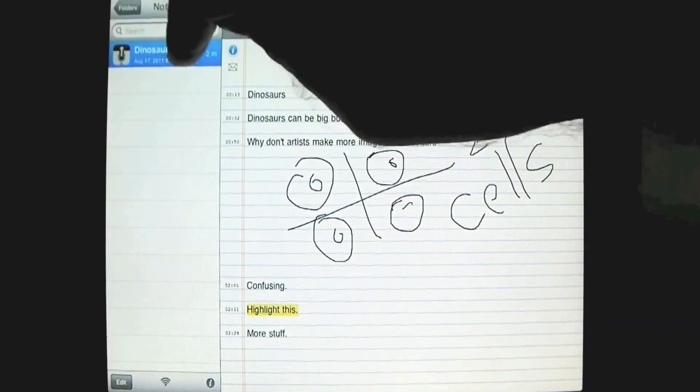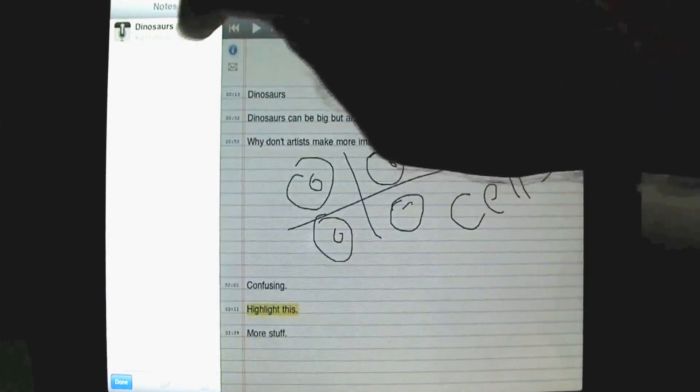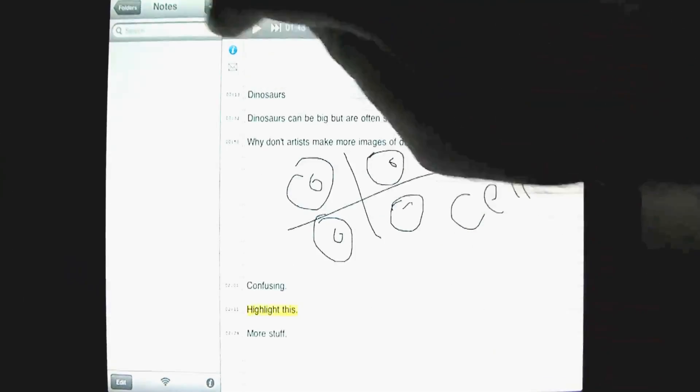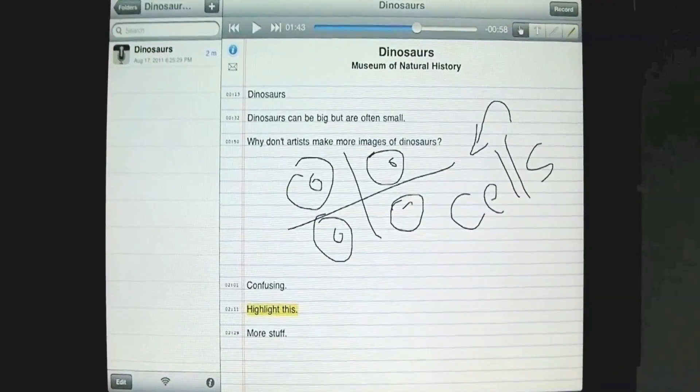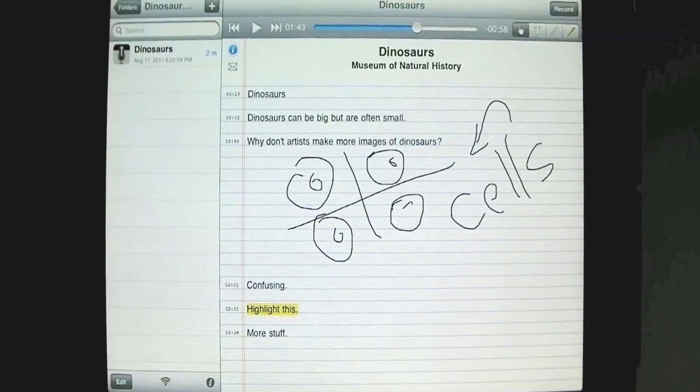It's still here. So we have our Dinosaur's lecture, and then we go to edit, select it again, and then we hit this little folder, and we can move it into the Dinosaur Talks folder, and we're done. So now, in my Dinosaur Talks folder, we have our very first Dinosaur lecture all ready for us. So again, you can organize things into folders, and that's another way to make things easily accessible.